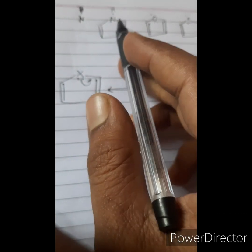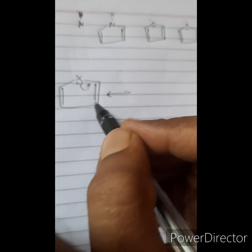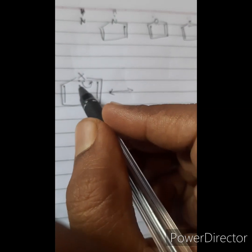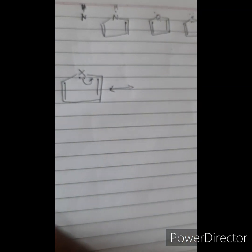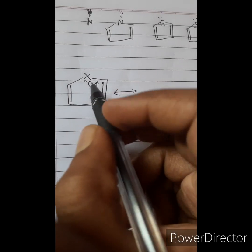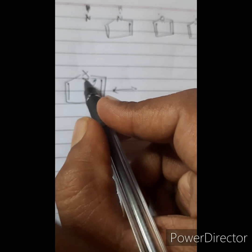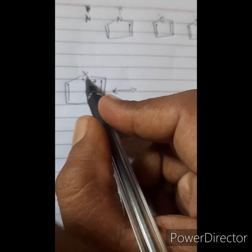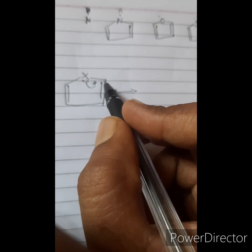The lone pairs of electrons present on nitrogen, oxygen, or sulfur are part of the delocalized aromatic system. The first step is to draw how electrons are shared between the heteroatom and the first carbon.